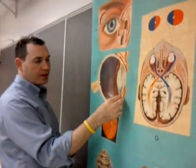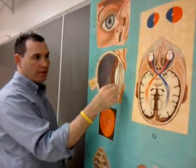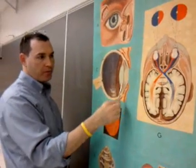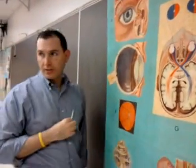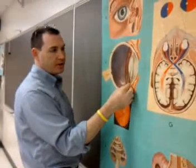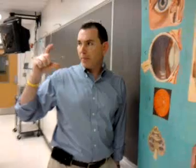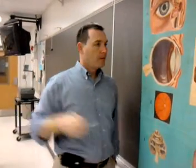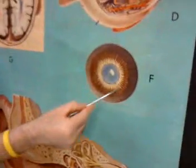The image now comes through the opening that is the pupil, which is surrounded by color called the iris. That image comes in and encounters the lens. The lens is going to accommodate by changing shape. That lens is suspended by the ciliary body that's all around it.